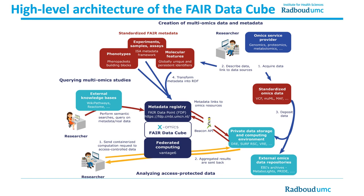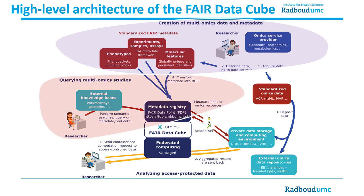This diagram shows the three main functions with which Fed the Cube can help researchers. The first function, in the purple area, is creation of multi-omics data and metadata. Fed the Cube helps the researcher — the dataset owner — to generate standardized FAIR metadata and publish the verified metadata in the public metadata registry. In our case, we use the FAIR Data Point. The second main function, highlighted in the pink area, is enabling a researcher — a dataset consumer — to perform semantic search queries towards the metadata registry.